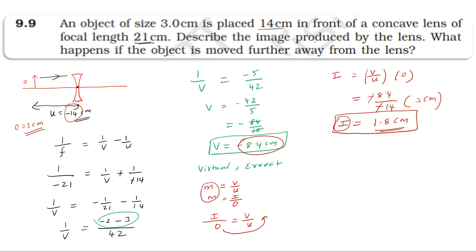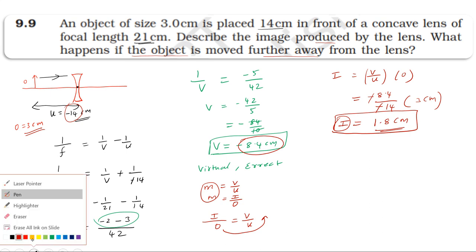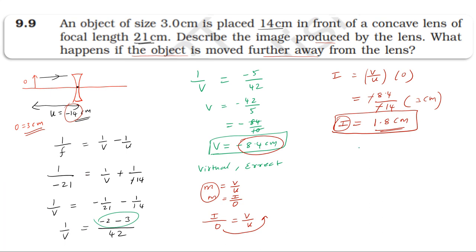Describing the image produced by the lens. What happens if the object is moved further away from the lens? As the object is moved away from the lens towards infinity, the image moves towards the focus. Object at infinity, image at focus.